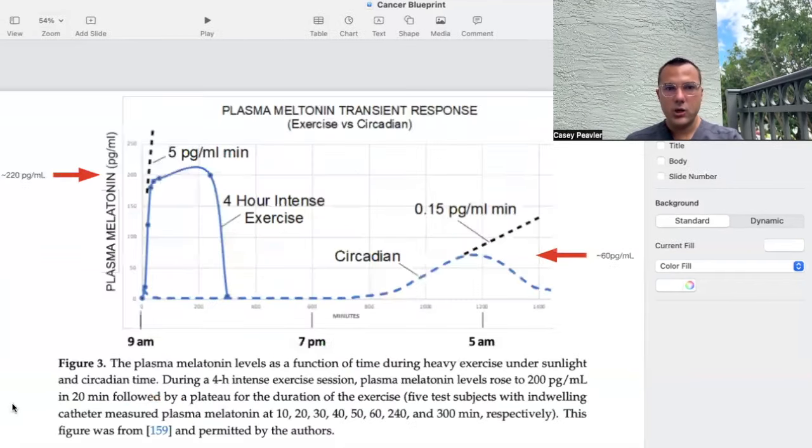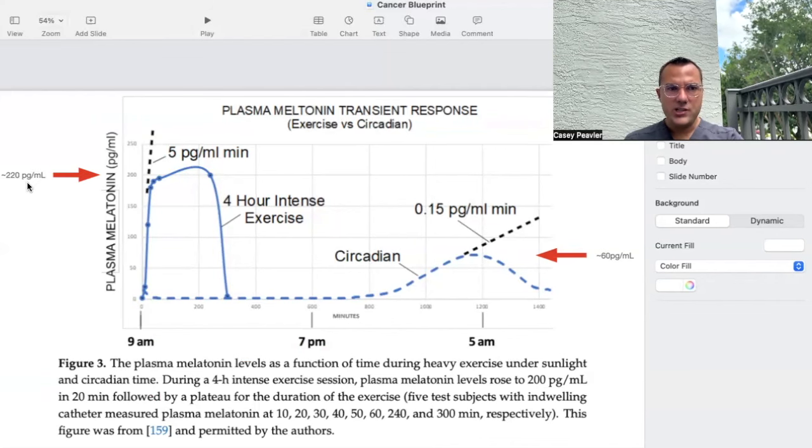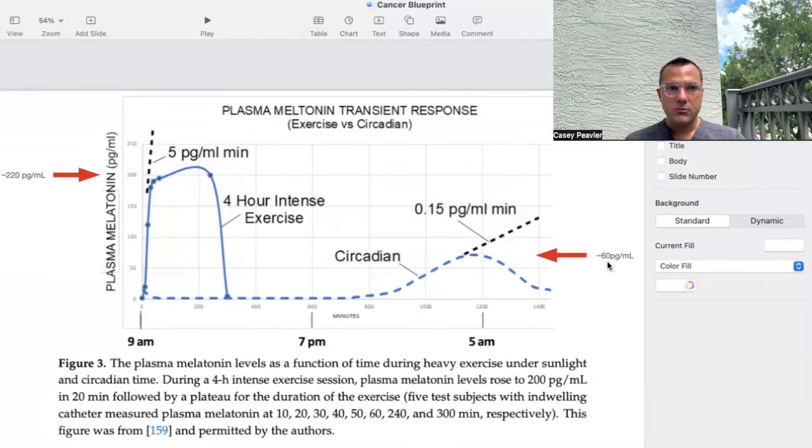I think this is one of the coolest slides I'll probably ever present to you. What they found was plasma melatonin - blood level melatonin - which is thought to be only found via pineal release at night under good circumstances, no light at night. They found there was a giant spike in melatonin production when the person was outside under sunlight doing exercise. It reached a quick spike up to about 220 picograms per milliliter. If you compare that to the max amount measured at night, that's 60 picograms per milliliter. We're talking about a more than threefold increase in melatonin, just sheer quantity over the circadian melatonin production.